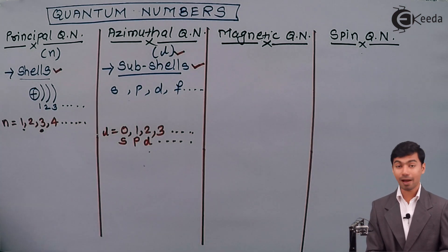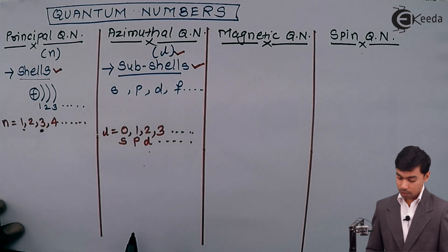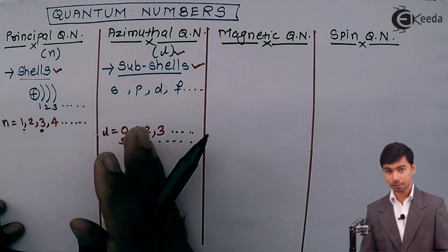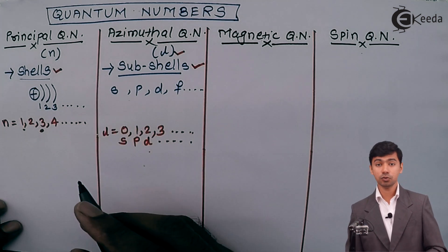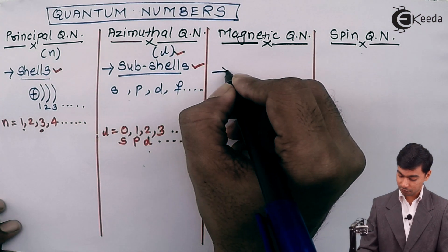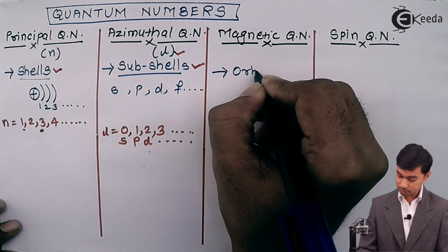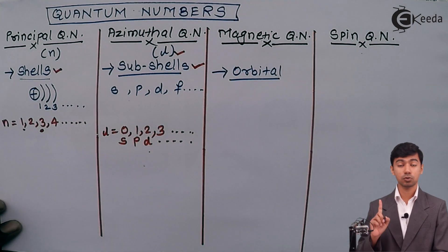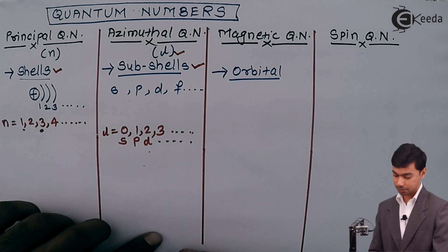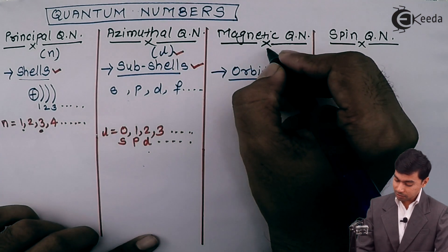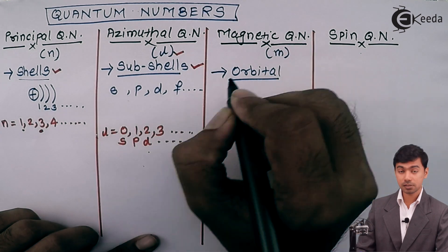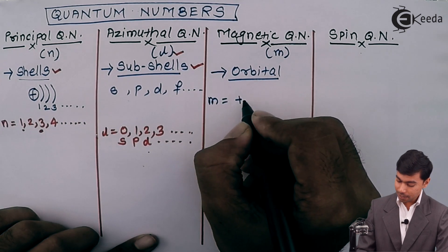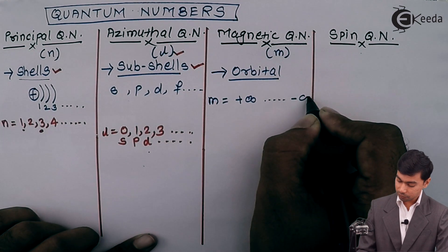Now let us move to the next quantum number — the magnetic quantum number. Just as shells are classified into subshells, subshells are further classified into orbitals. The magnetic quantum number gives information about the orbitals of a particular atom. It is denoted by the symbol small m, and it has values ranging from plus infinity to minus infinity.